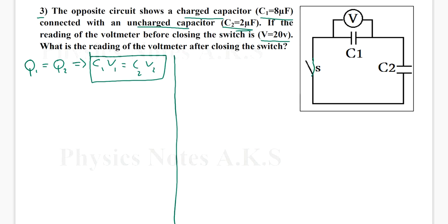Let's remember that C1, after closing the switch, will work as a battery or will give some voltage to C2, which means the 20 volts will be separated into C1 and C2. So the 20 is actually V1 plus V2. This is after closing the switch.